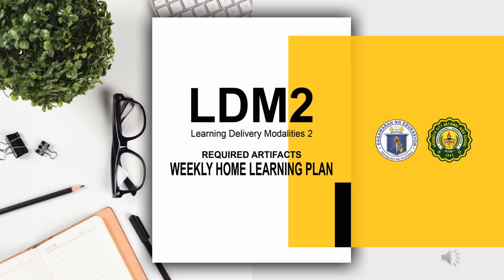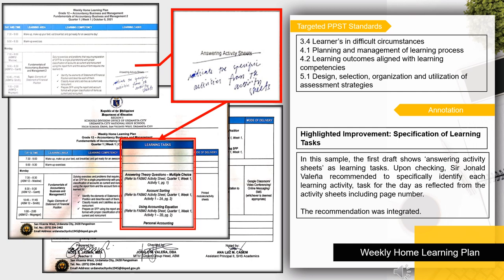The following are the samples of the Weekly Home Learning Plan as a required artifact. The targeted PPST standards for the Weekly Home Learning Plan are: 3.4 Learners in difficult circumstances, 4.1 Planning and management of the learning process, 4.2 Learning outcomes aligned with learning competencies, and 5.1 Design, selection, organization, and utilization of assessment strategies.